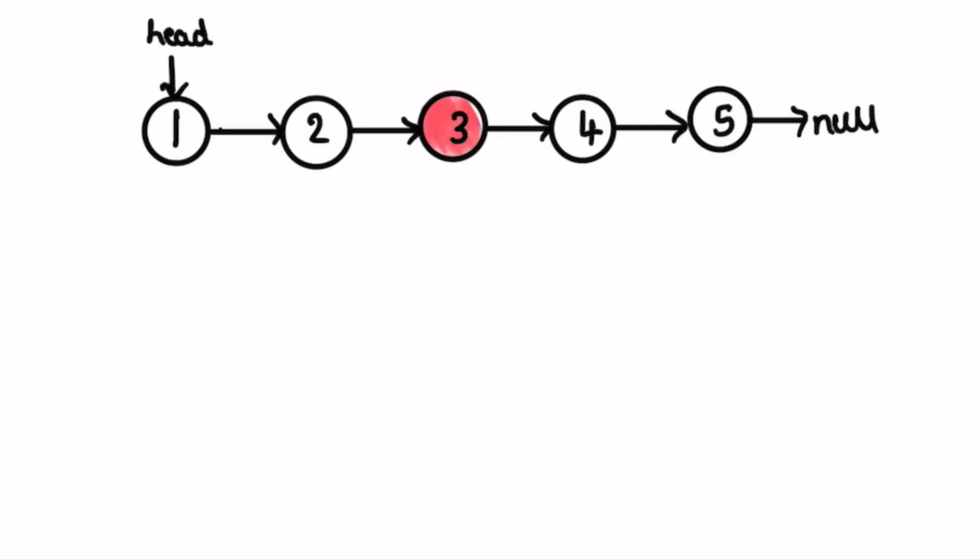Let's take a look at the examples and see how this question can be solved. I've taken the first example — this is the head of the linked list pointing at the beginning, and the last node points to null. To solve this, there's a famous algorithm called the Tortoise and Hare algorithm, where the tortoise is the slow pointer and the hare is the fast pointer. We declare both pointers pointing at the head.